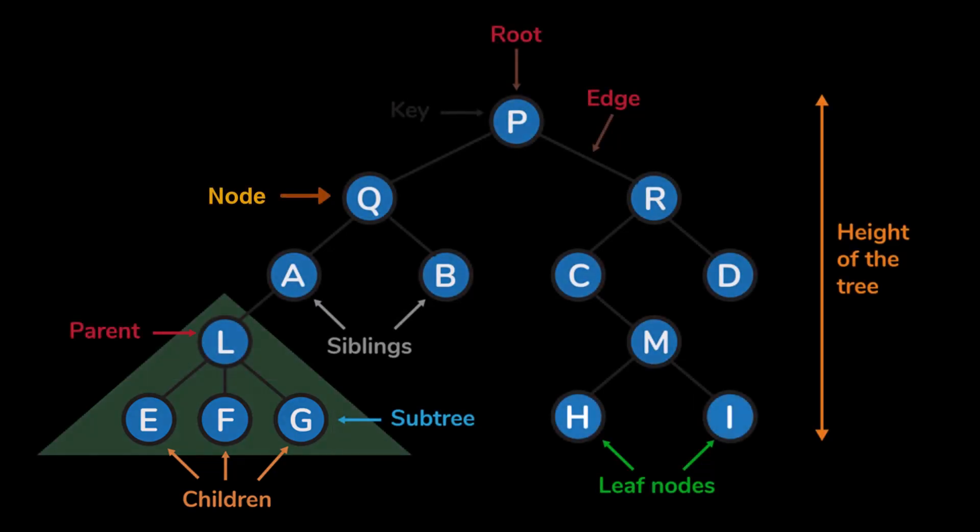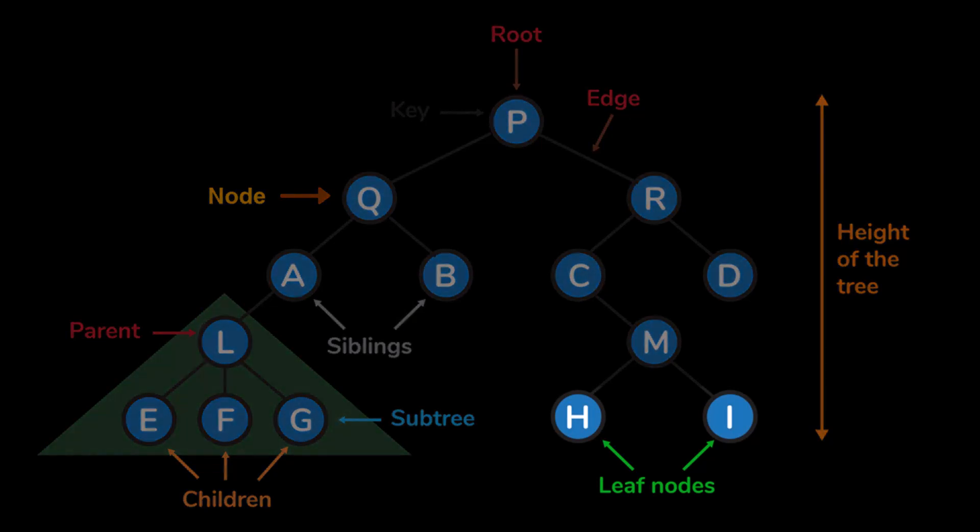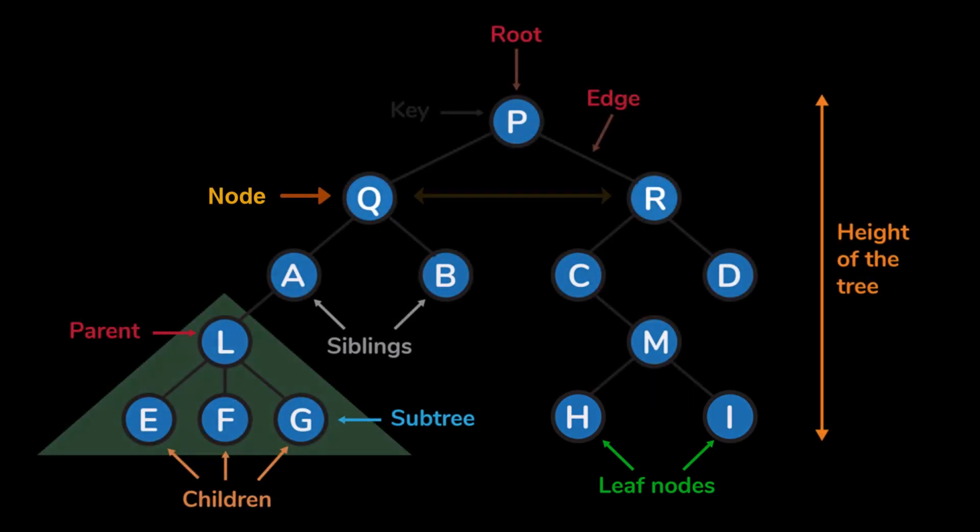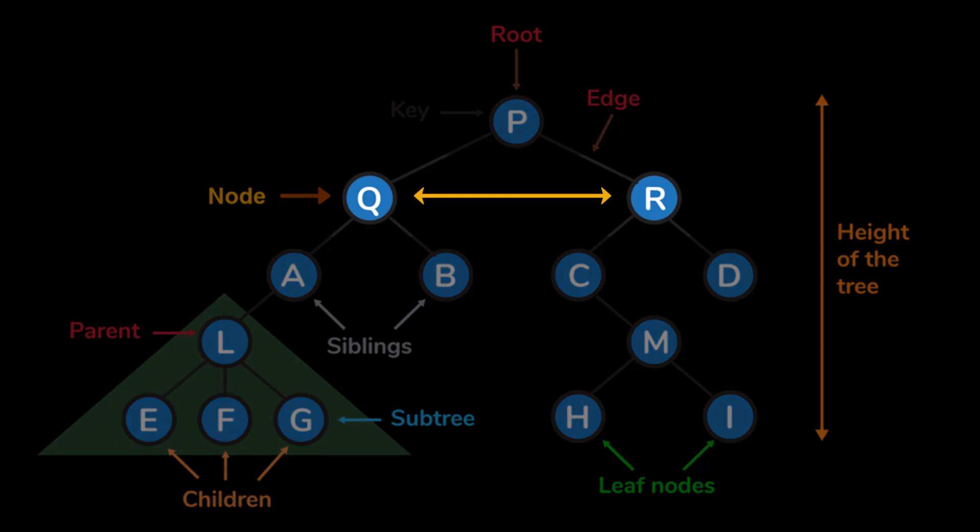Leaf nodes are nodes with no children. They are terminal nodes in the tree. Internal node is a node with at least one child. Internal nodes are not leaf nodes.